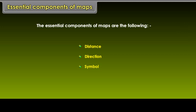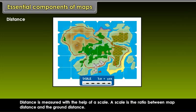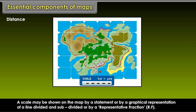Essential Components of Maps. The essential components of maps are the following: Distance, Direction and Symbol. Distance is measured with the help of a scale. A scale is the ratio between map distance and the ground distance. A scale may be shown on the map by a statement or by a graphical representation of a line divided and subdivided or by a representative fraction, RF.